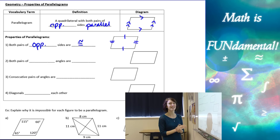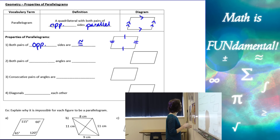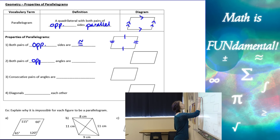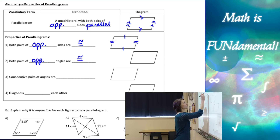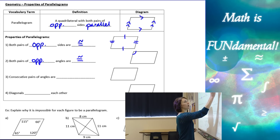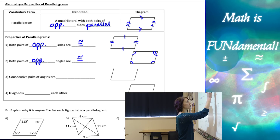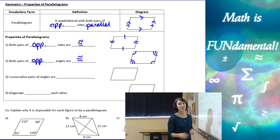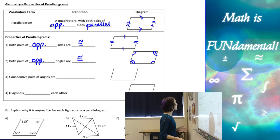The next property: both pairs of opposite angles have to be congruent as well. Using our angle symbols, we're going to mark those on our diagram so we can see what that looks like.